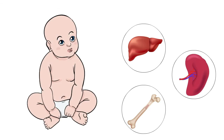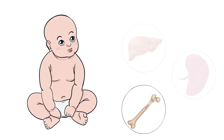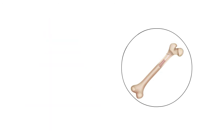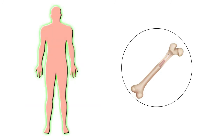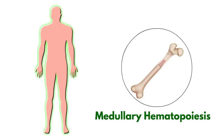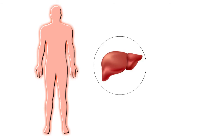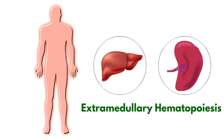After birth, hematopoiesis stops in the liver and spleen and continues in the bone marrow. Generally, in normal adults, hematopoiesis occurs in the bone marrow and is called medullary hematopoiesis. In certain pathological conditions, hematopoiesis occurs in the liver and spleen, and is known as extramedullary hematopoiesis.